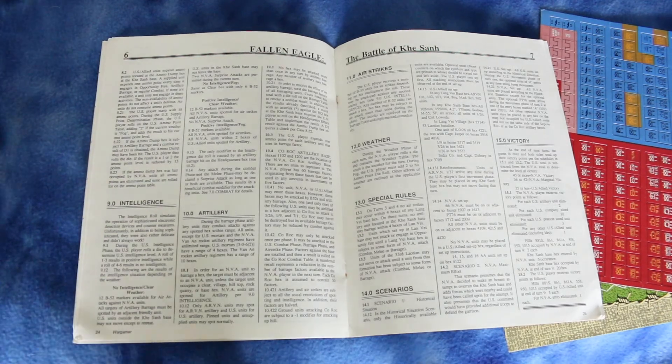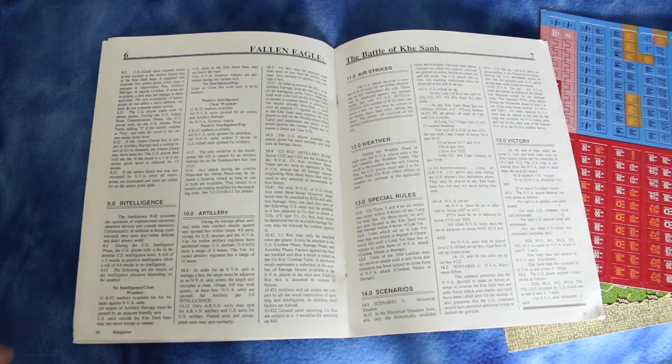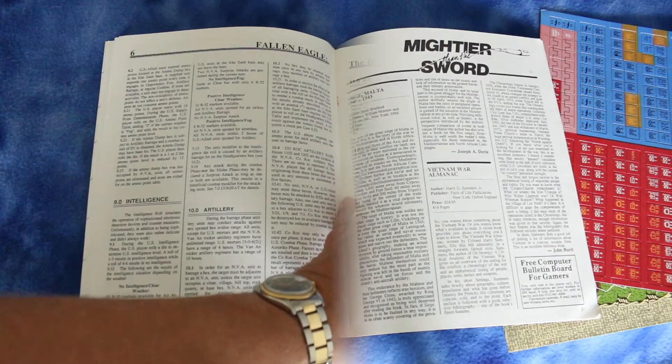And here's the victory points. Looks like it's won with victory points. I would assume that if Khe Sanh is occupied by the NVA it's an automatic victory, but it doesn't seem to say that here.